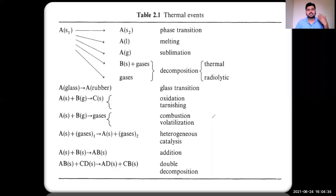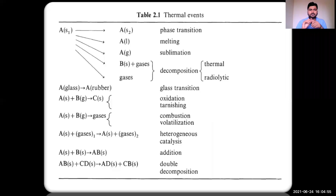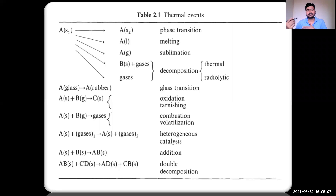Thermal events are some phenomena — some transitions — which happen with the sample whenever we are heating the sample to increasing temperature. Different types of thermal events were already discussed in the last lecture, so I will not go into detail again. To summarize: thermal events are changes which occur in the sample whenever we heat it.